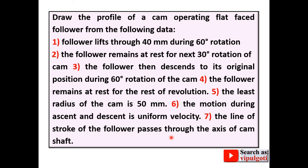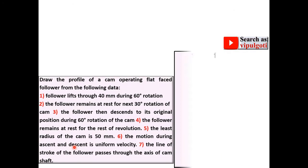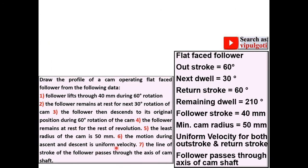The follower then descends to its original position during the next 60 degrees — that is the descent angle. The follower remains at rest for the rest of the revolution. The least radius of the cam is 50 mm. The motion during ascent and descent is uniform velocity. The line of stroke of the follower passes through the axis of the camshaft. Based on this data, the remaining dwell is 210 degrees, found by subtracting 60, 30, and 60 from 360 degrees.